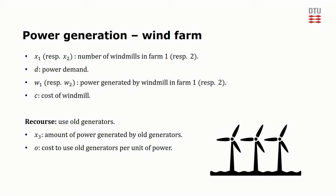In summary, the problem has two stages. The first is to determine the number of windmills in each of the two wind farms, and the second is to determine how much electricity to generate with the old generators.